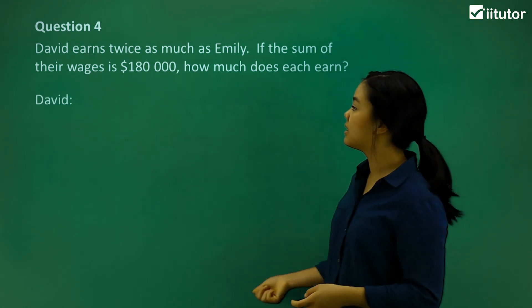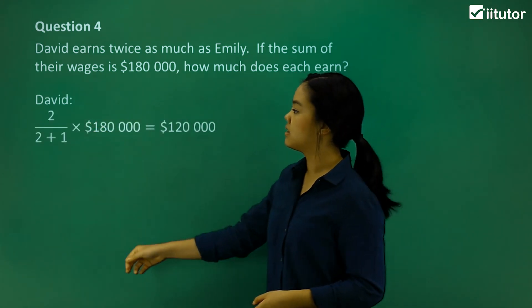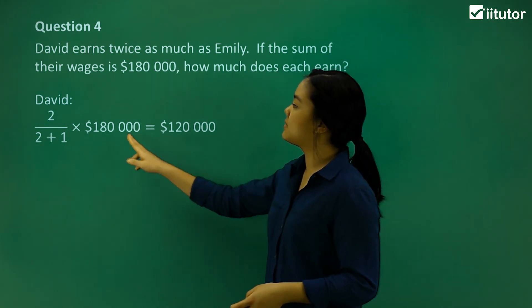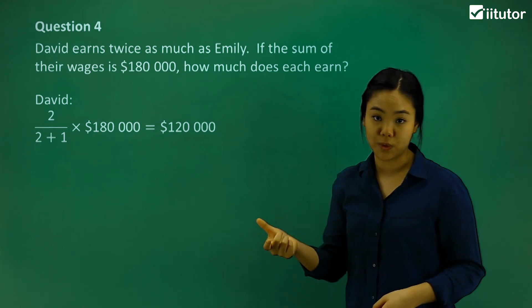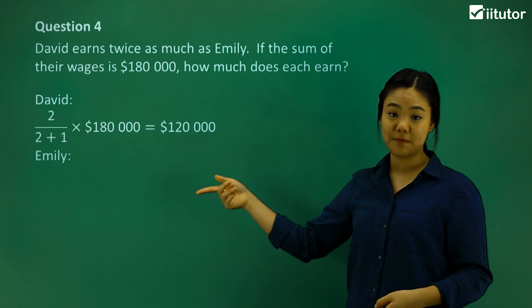So 2 to 1, okay? So for David, we can say 2 over 2 plus 1. So 2 to 1 for David and Emily, and then we times that 180,000 of the total wages. Okay? So David earns 120,000. So for Emily,